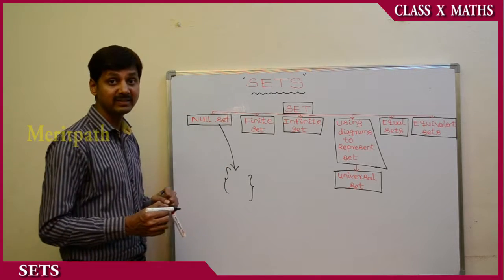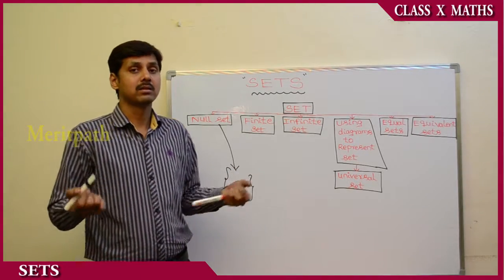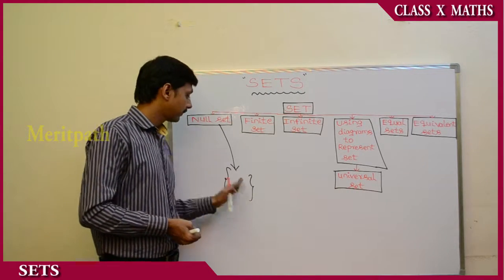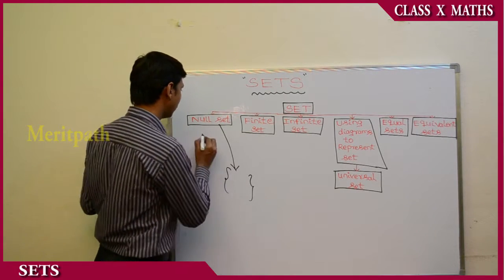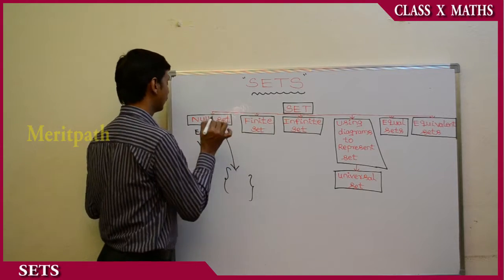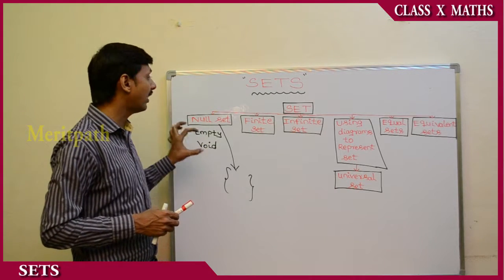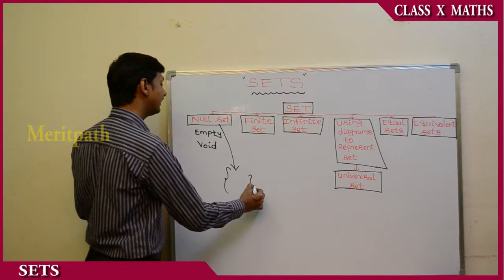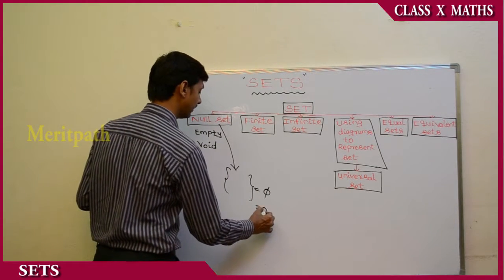A null set is a set which consists of no elements. When we don't write anything inside the set, we call it a null set, also known as an empty set or void set. The null set is represented by the symbol phi (Φ).